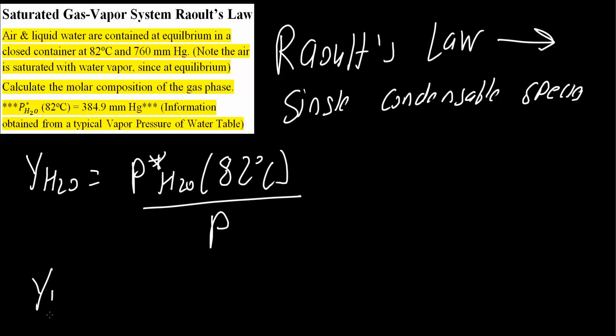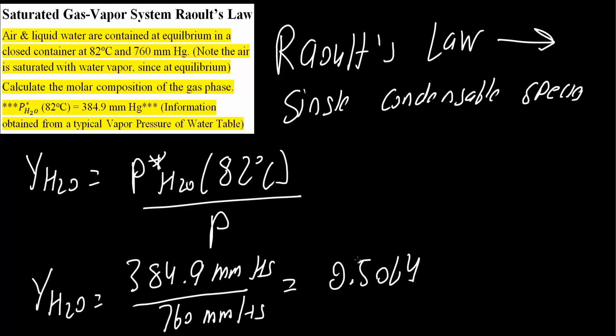So YH2O will equal P star H2O, which was 384.9 mmHg, divided by pressure, which is 760 mmHg. This right here would give us 0.5064 for the composition of water.